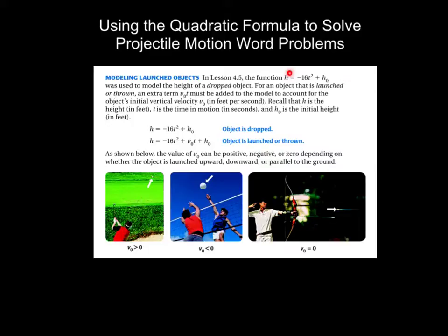When we talk about objects that are launched or thrown in a direction other than just dropped vertically down, we introduce the term v naught times time. V naught has to do with an object's initial velocity. The equation h equals negative 16t squared plus v naught times t plus h naught is actually in standard form — a quadratic in standard form. So if we want to know how long it takes an object to hit the ground, our final height would be zero, and we identify our a, b, and c terms as negative 16, v naught, and h naught, then plug them into the quadratic formula.